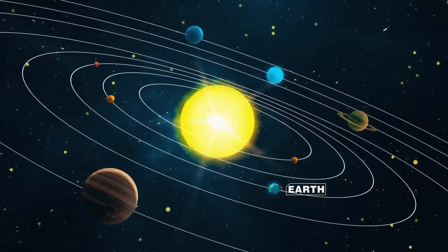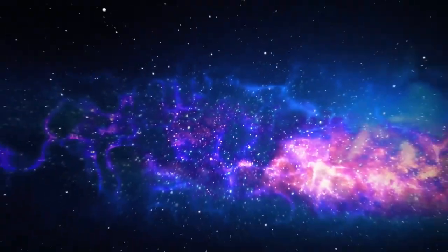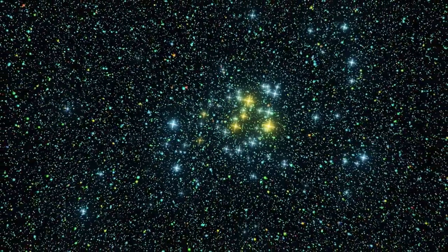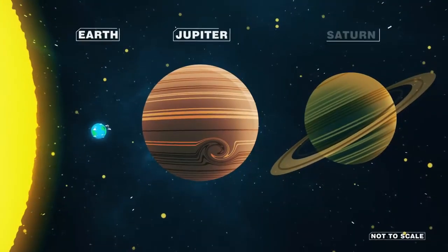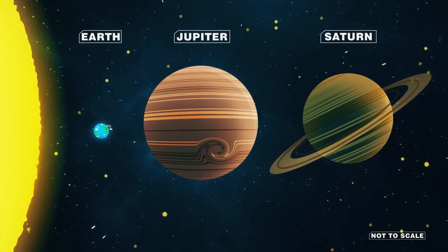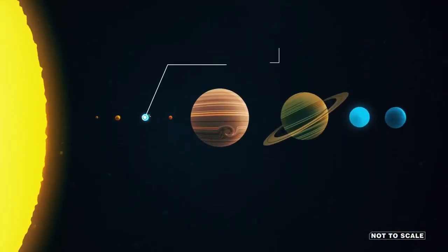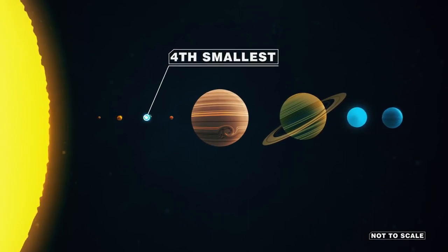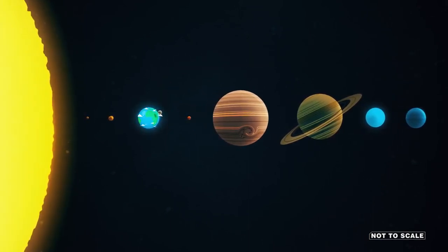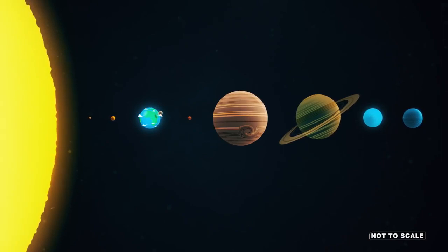Even in our solar system, which pales in comparison to galaxies, nebulas, and clusters of stars, Earth is dwarfed by gas giants like Jupiter and Saturn. Of the eight planets in our solar system, Earth is the fourth smallest. But what if the Earth grew ten times larger? Is that even possible?